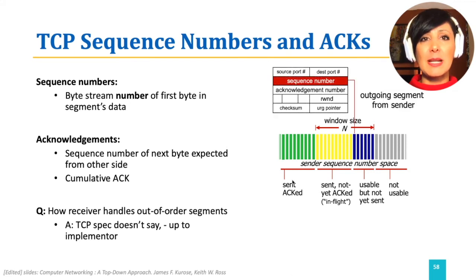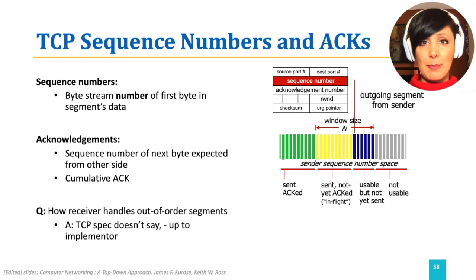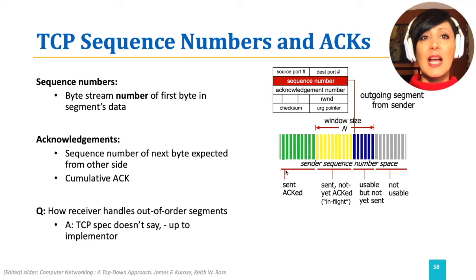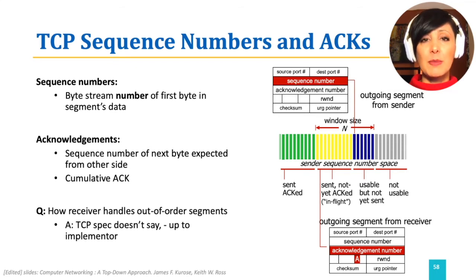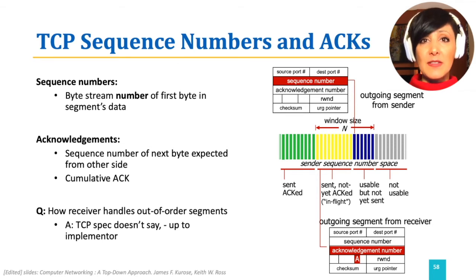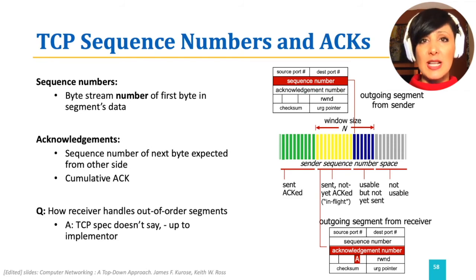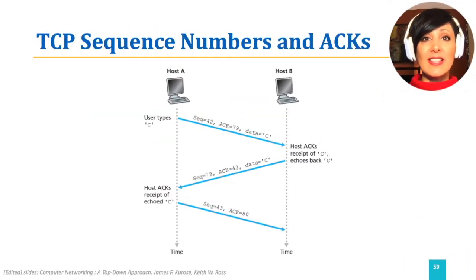The sequence number in the TCP segment shows the byte stream number of the first byte in the segment's data. Acknowledgements coming from the receiver include the sequence number of the next byte expected from the receiver side, and contain a cumulative ACK for received segments. TCP RFCs do not specify handling of out-of-order segments, and it is up to the implementer to decide what to do. Let's take a quick look at the sequence numbers in a very simple TCP connection scenario.